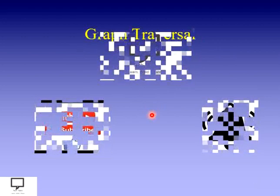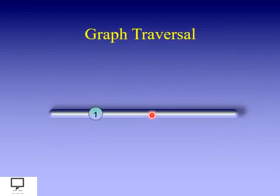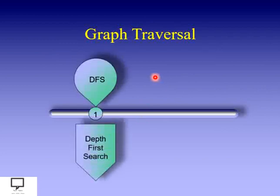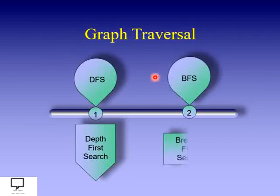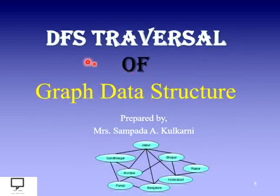First of all, let's see what different graph traversal techniques are. The first technique is depth first search traversal, which goes into depth, and the other technique is breadth first traversal, which traverses a graph according to breadth — that is, on the same level. In today's session we are going to focus on depth first search traversal technique, that is DFS traversal, for a graph data structure.